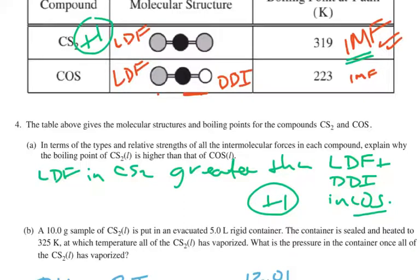Now, you could go on and say, well, why is the London dispersion force greater in this first case? And the idea would be that that sulfur has more electrons, and therefore it would have more electrons, and therefore it would have a more polarizable electron cloud.